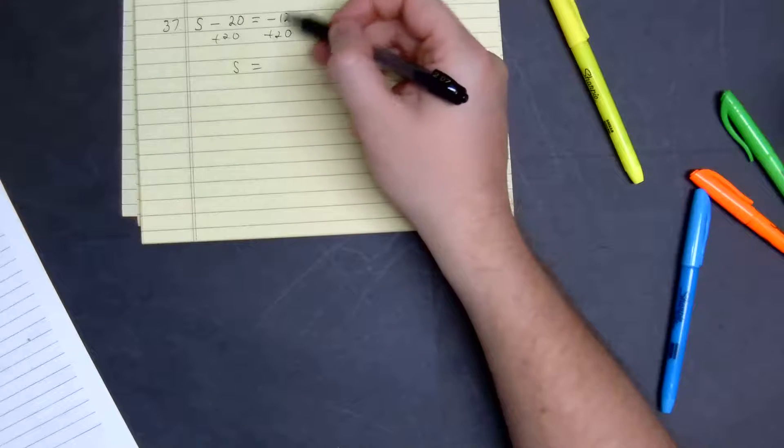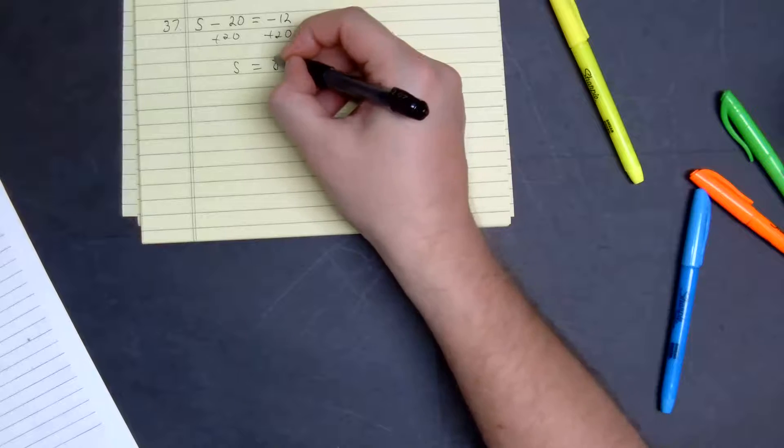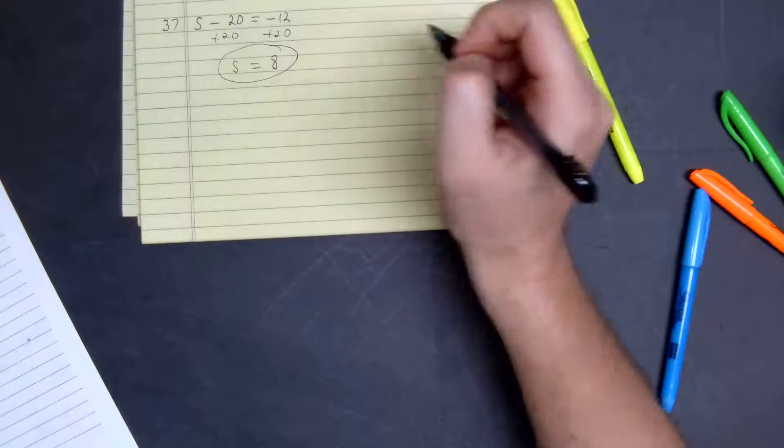Since this 20 is bigger, it's a minus. 20 minus 12 will give us 8 positive. So our answer here would be S is equal to 8.